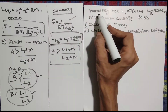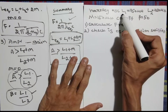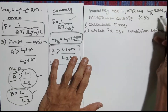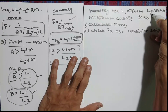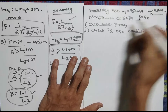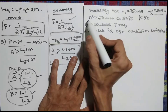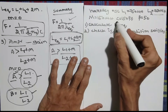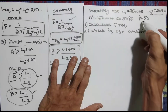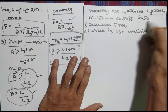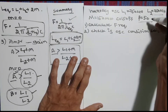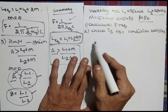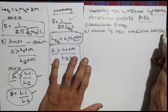Now we will discuss a Hartley oscillator problem. Given: L1 is equal to 750 micro henry, L2 is equal to 750 micro henry, so L1 equals L2. Mutual inductance M is given as 150 micro henry, capacitor C is 150 picofarad, and beta value is given as 50. Calculate the frequency and check if the oscillation condition is satisfied.